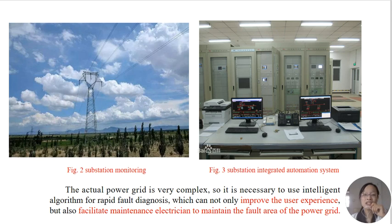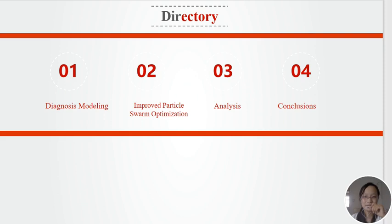Figures 2 and 3 show Substation Monitoring and Substation Integrated Automation Systems. The actual power grid is very complex, so it is necessary to use intelligent algorithms for rapid fault diagnosis, which can not only improve the user experience, but also maintain the power grid. There are four parts: Diagnosis Modeling, Improved Particle Swarm Optimization, Analysis, and Conclusions.